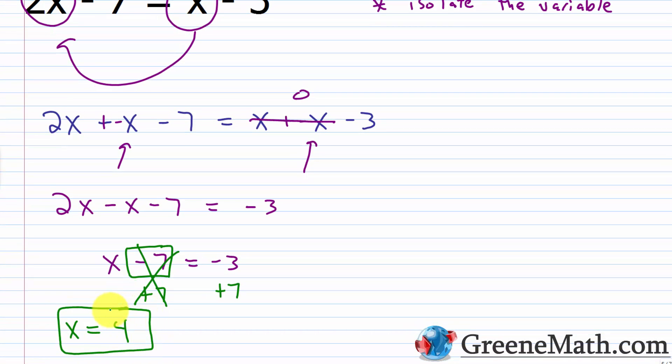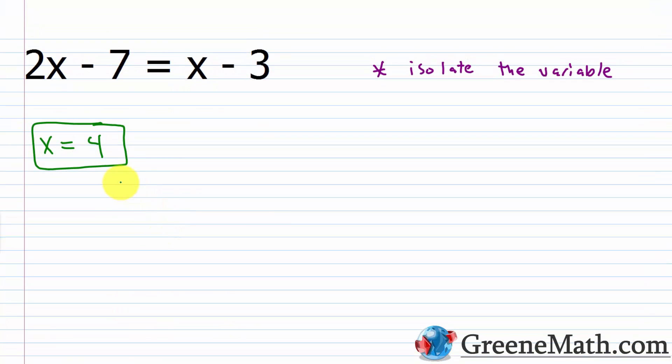So if we wanted to check this, I would plug in a 4 for this x here and this x here. It's got to be for each occurrence of the variable. So I would have 2 multiplied by 4 minus 7 is equal to 4 minus 3. 2 times 4 is 8. So you'd have 8 minus 7 over here. 4 minus 3 is 1. 8 minus 7 is 1. So you get 1 equals 1. This is true. So we know our solution here, x equals 4, is correct.